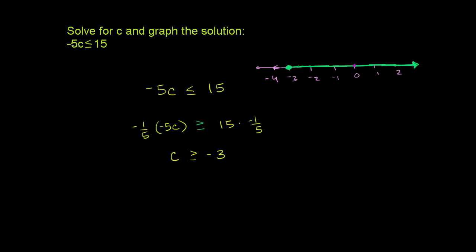Negative 4 times negative 5 is positive 20. And positive 20 is not less than 15. So it's good that we did not include negative 4. So this is our solution and this is that solution graphed.